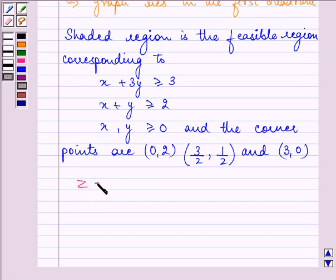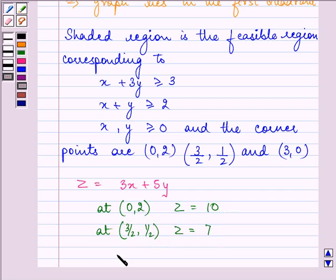Finally, we have to minimize the value of z, that is 3x plus 5y. Now at (0, 2), the value of z is equal to 10. At (3/2, 1/2), the value of z is equal to 7. And at (3, 0), the value of z is equal to 9.